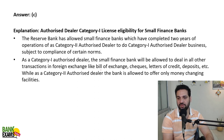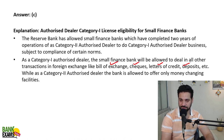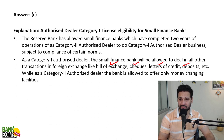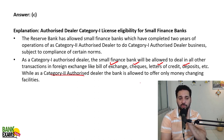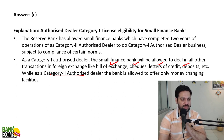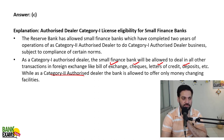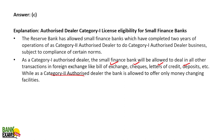Category One provides bill of exchange, cheque, letter of credit, and deposit services. Category Two Authorized Dealers only provide money changing facilities — that is the only thing they offer.